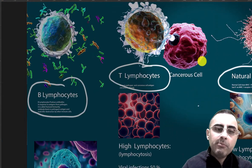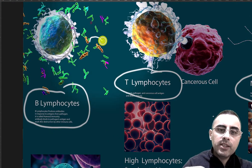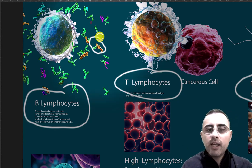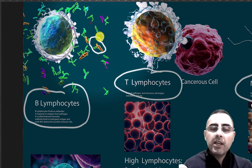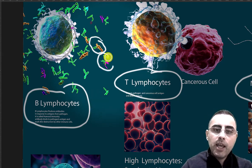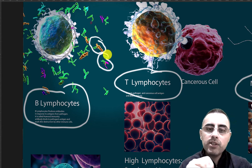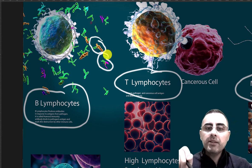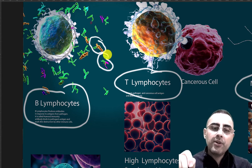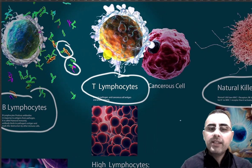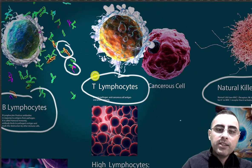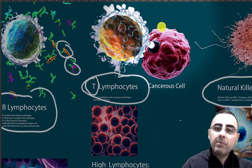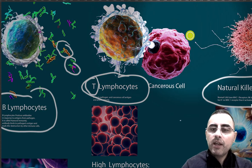B-lymphocytes produce antibodies. These antibodies mark pathogens — they bind to antigens, and the pathogen will be marked for destruction by other cells. T-lymphocytes, on the other hand, directly attack pathogens or cancerous cells.